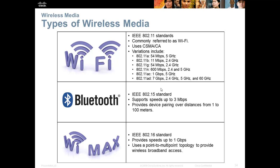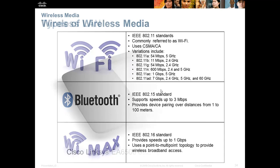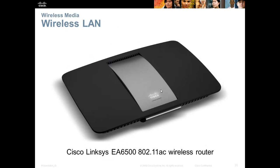Bluetooth is IEEE standard 802.15, typically used to tether two devices together for data transmission. Speeds are only about 3 megabits per second and the range is limited, but it provides a secure, reliable connection between two devices. WiMAX is IEEE 802.16, providing speeds up to 1 gigabit per second using a point-to-multipoint topology for wireless broadband access. Many newer wireless access points and routers no longer have external antennas, though antennas can be added to increase range or directionality.